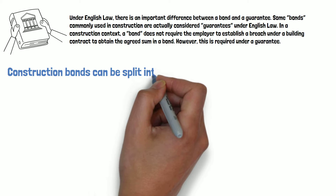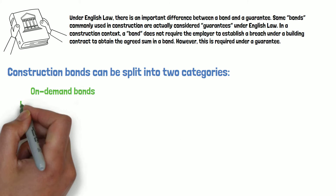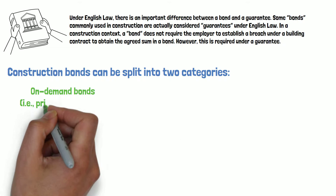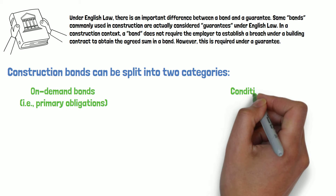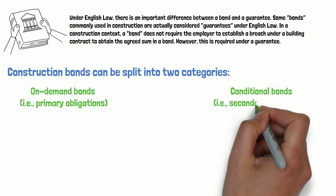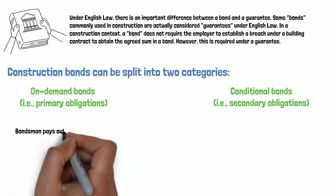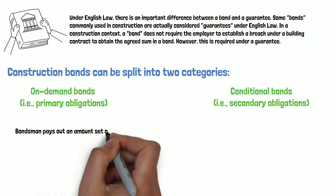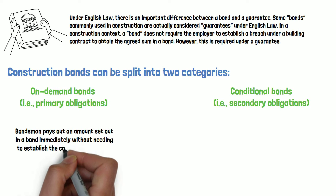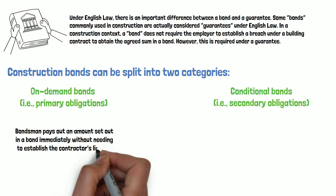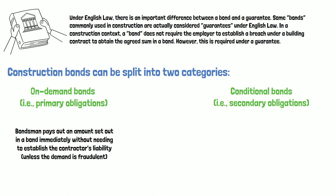Construction bonds can be split into two categories: on-demand bonds, i.e. primary obligations, and conditional bonds, i.e. secondary obligations. With on-demand bonds, the bondsman pays out an amount set out in the bond immediately without needing to establish the contractor's liability, unless the demand is fraudulent.